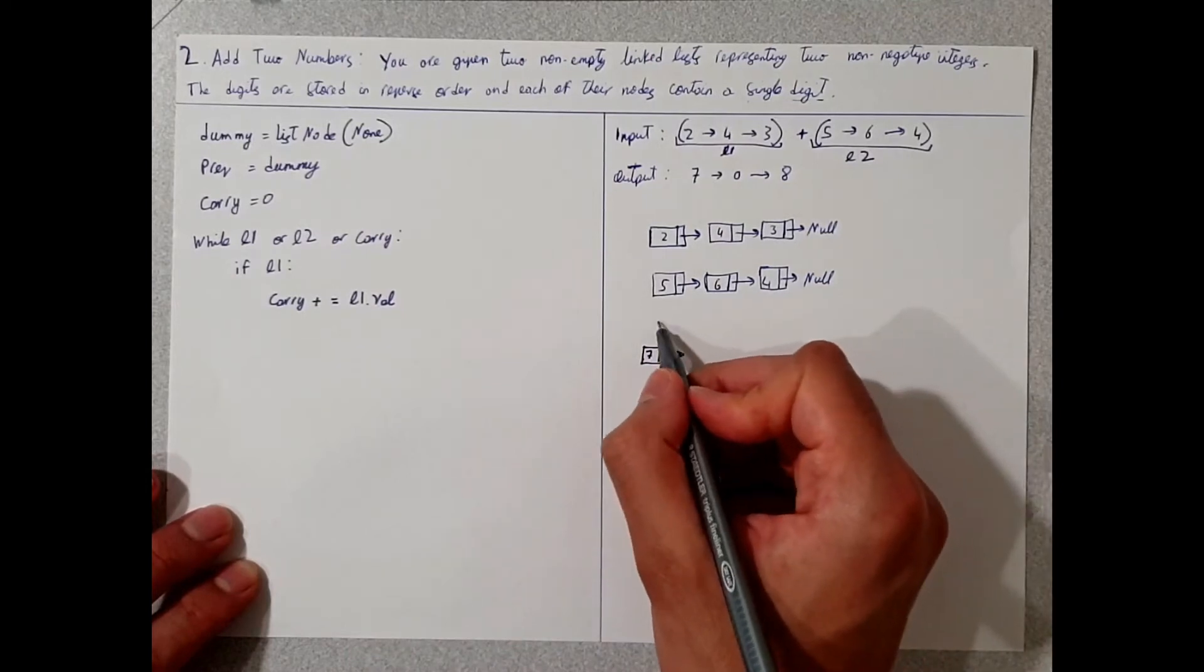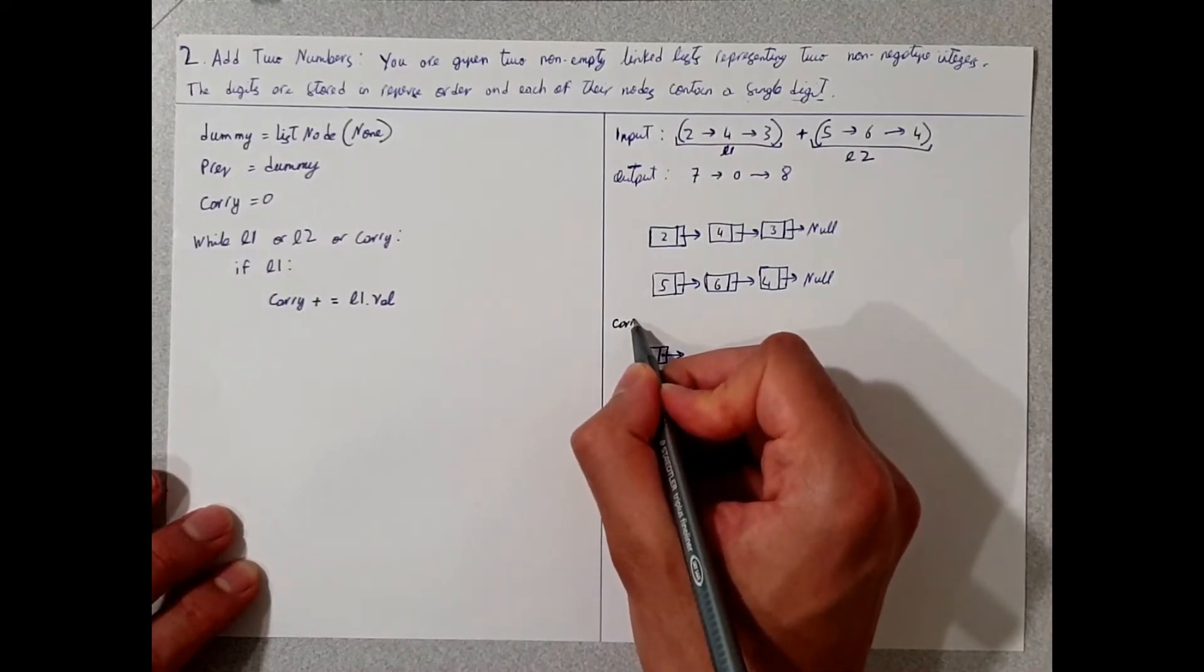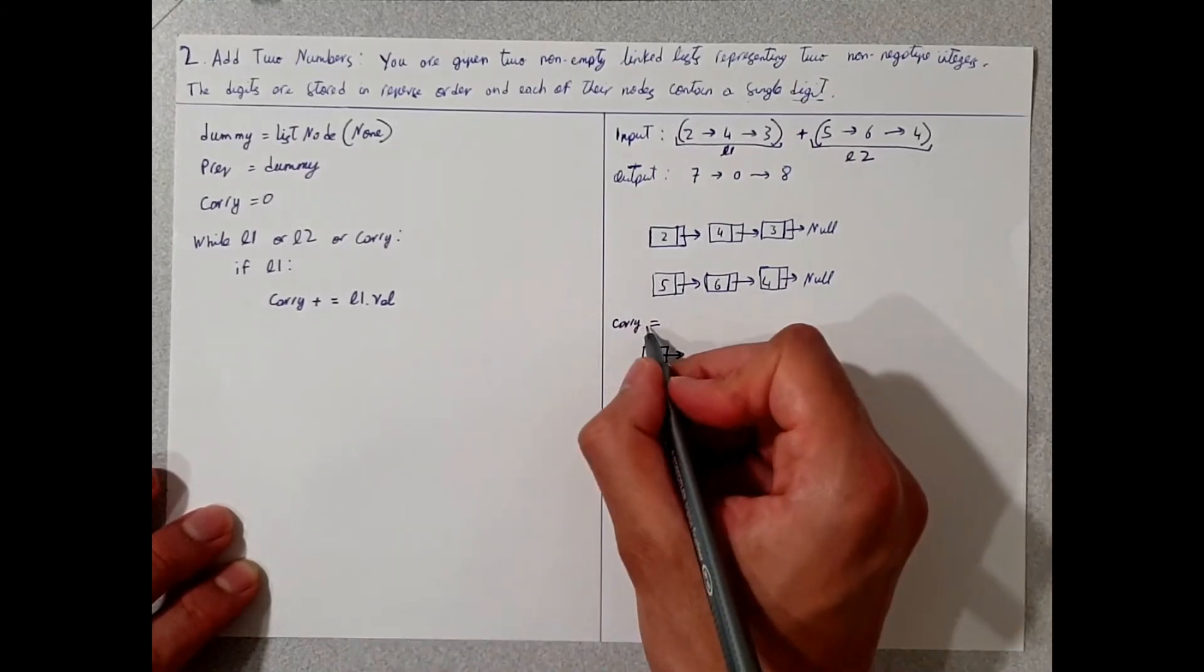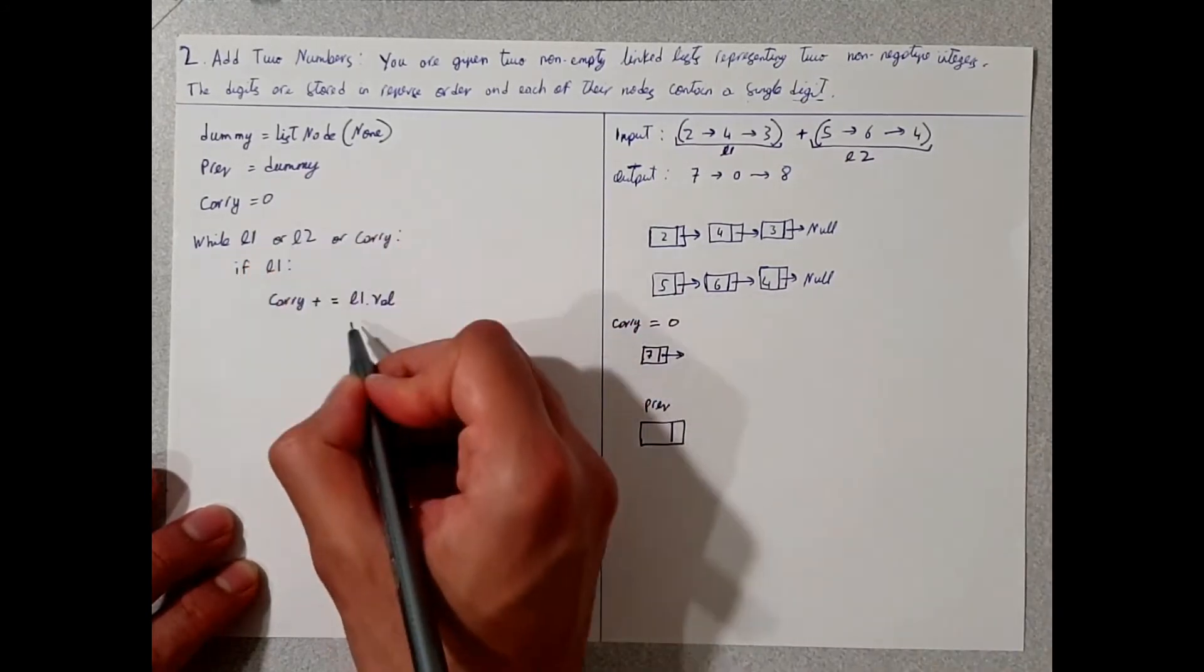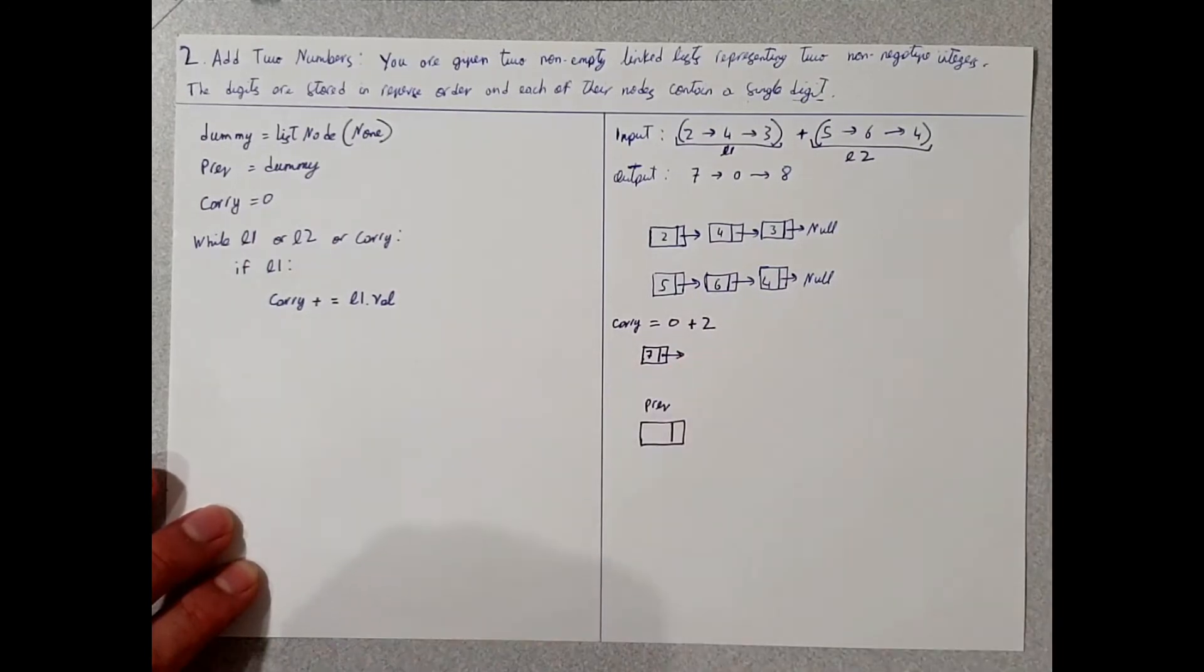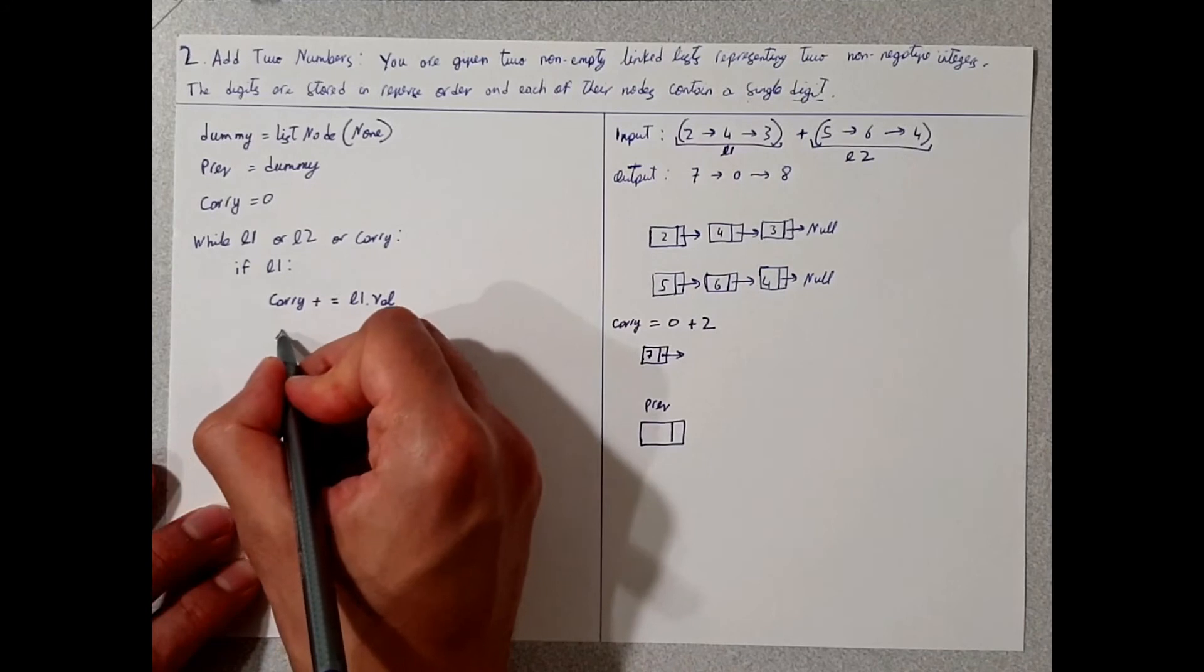So if we imagine we have something called carry here, the first thing it does is it takes in two. So it was zero originally, we're going to add two to the carry.